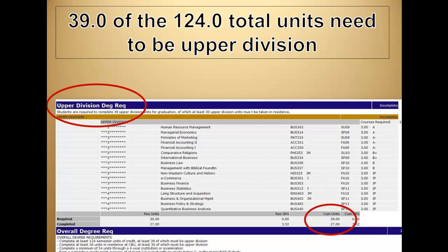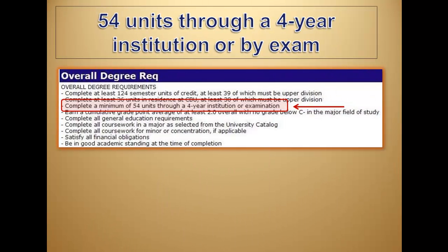However, if you complete your major but haven't earned at least 39 units of upper division, additional upper division units may be taken in other academic areas. Another overall requirement is that students must complete a minimum of 54 units through a four-year institution or by an examination such as AP, CLEP, or Dantes.